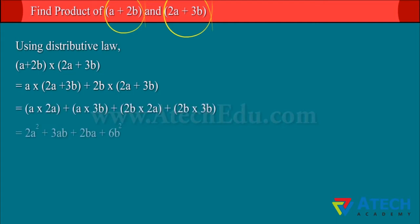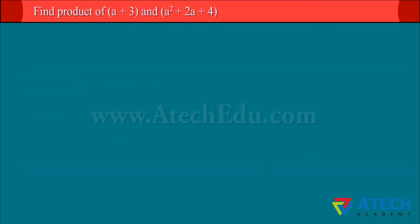Hence, after multiplication, we shall expect 2 × 2 = 4 terms. But we get only 3 terms because like terms, ba and ab, have been combined.